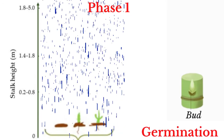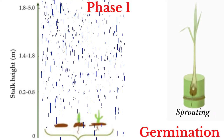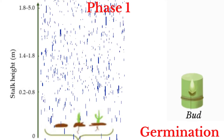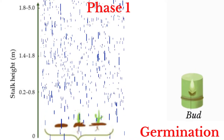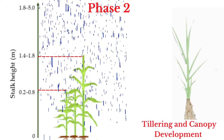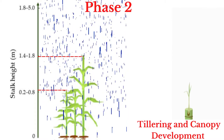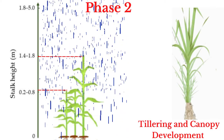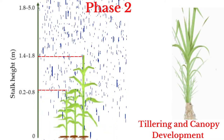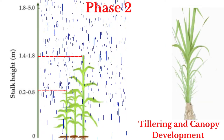The germination phase occurs four to six weeks after the sugarcane is planted and involves the activation and subsequent sprouting of vegetative buds. The second phase is the tillering and canopy development phase, which occurs between eight to eighteen weeks after the crop is planted. This involves the formation of secondary sprouts from underground buds.